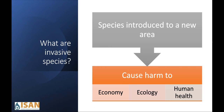First, let's cover what an invasive species is. An invasive species is when a species is introduced to a new area. Once that species is there, it can cause harm to our economy, local plants and wildlife, or even human health. Invasive species can cost us millions of dollars to control them affecting the economy, gobble up all of the native and natural species found in an area affecting the ecology, or spread harmful diseases affecting human health.